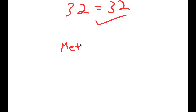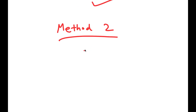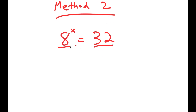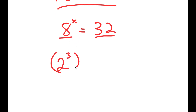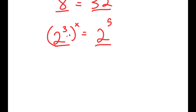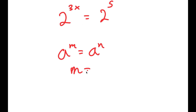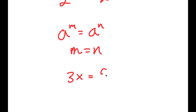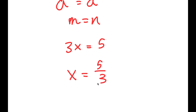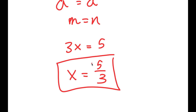I also have a second, simpler method of solving this problem. We have the same equation, 8 to the power of x equals 32. I'll rewrite both numbers with the same base: 8 as 2 to the power of 3, and 32 as 2 to the power of 5. So 2 to the power of 3, to the power of x, equals 2 to the power of 5, which means 2 to the power of 3x equals 2 to the power of 5. Because the bases are equal, the exponents must be equal: 3x equals 5, so x equals 5 over 3.